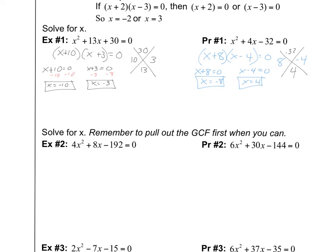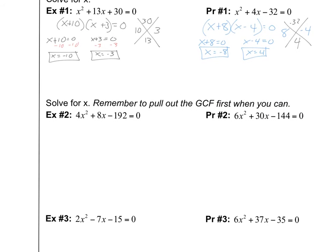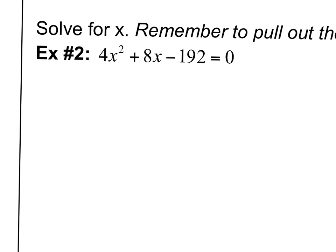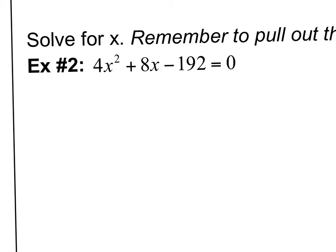Let's do example 2. On these ones, it says remember to pull out the greatest common factor first when you can. So these first ones, you can pull out a greatest common factor. What I want you to see here is if we were to pull out, and the greatest common factor here is 4, we'd get 4 times x squared plus 2x minus 48 equals 0.